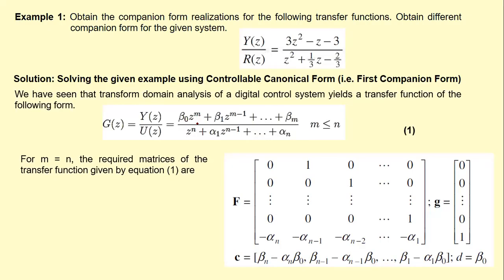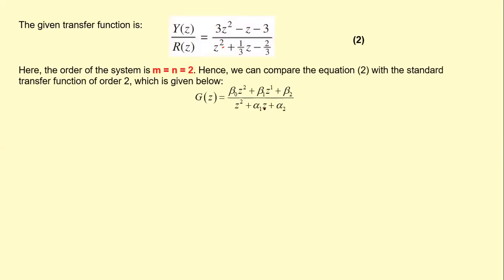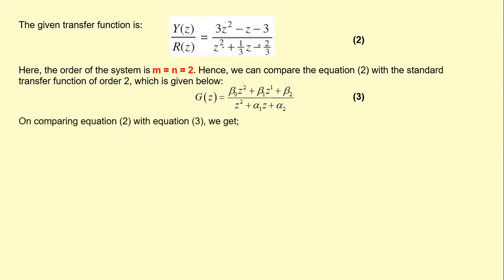By putting m and n equal to two we obtain equation three. Comparing equation two and equation three, we get: beta naught is equal to 3, beta one is equal to minus 1, and beta two is equal to minus 3. Similarly, alpha one is equal to 1/3 and alpha two is equal to minus 2/3. So we have obtained all the required coefficients.